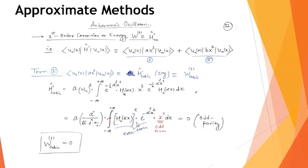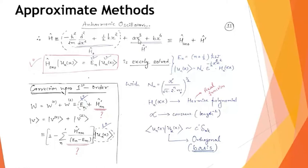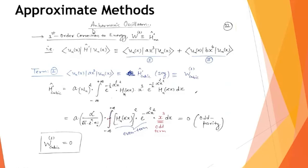Because of this odd-even parity argument, the first-order correction due to the cubic term ax³ is zero. There is no contribution, no energy correction from this term.